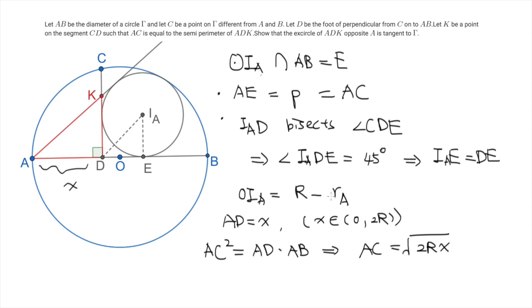So now we have AC, which equals AE. Then we can evaluate DE. So DE is nothing but AE minus AD, which is square root of 2RX minus X. And in particular we remark that this term is strictly larger than 0, so this represents a length.